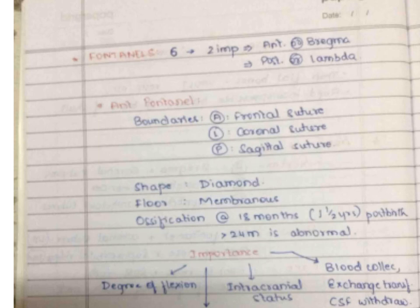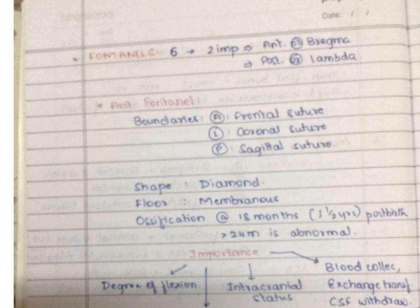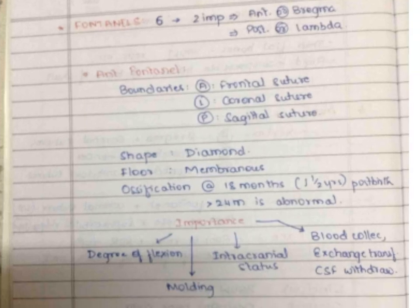The anterior fontanel is bounded anteriorly by the frontal suture, laterally by the coronal sutures, and posteriorly by the sagittal suture. Being formed by three types of sutures, it forms a diamond-shaped gap at their meeting point. It has a membranous floor and will ossify at 18 months after birth. If ossification occurs after two years, that is an abnormal case.